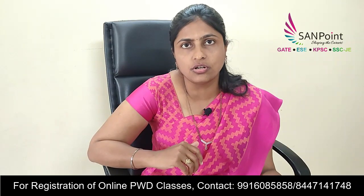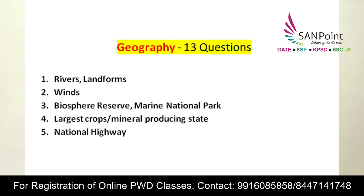Moving to geography, 13 questions appeared. Questions were on rivers, land reforms, winds, waterfalls, biosphere reserves, national parks, and marine national parks. Questions also covered the largest producing states — for example, which state produces the largest quantity of wheat or sugarcane. Questions on national highways also appeared.